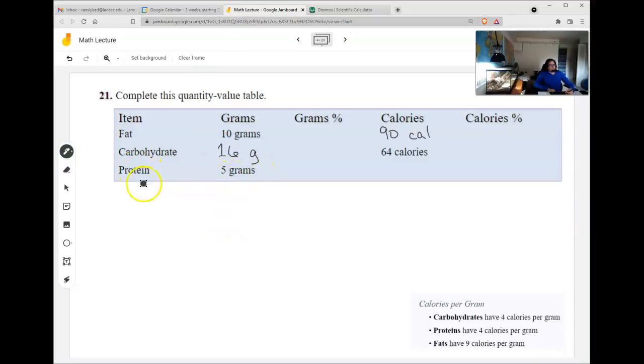So 16 is my carbohydrate number for grams. And then I'm going to go times 4 to go with the proteins. 4 times 5 is 20. Now I have these two columns done.